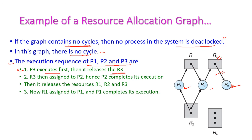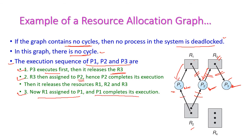After completing P3, R3 is released and assigned to P2. Hence P2 now holds all the resources R1, R2, and R3, and without any delay P2 completes its execution. After completing P2, it releases R1, R2, and R3. Now R1 is assigned to P1 because P1 had already given a request for R1. Hence P1 completes its execution. The sequence is: P3 executes first, then P2, then P1 — hence there is no deadlock.